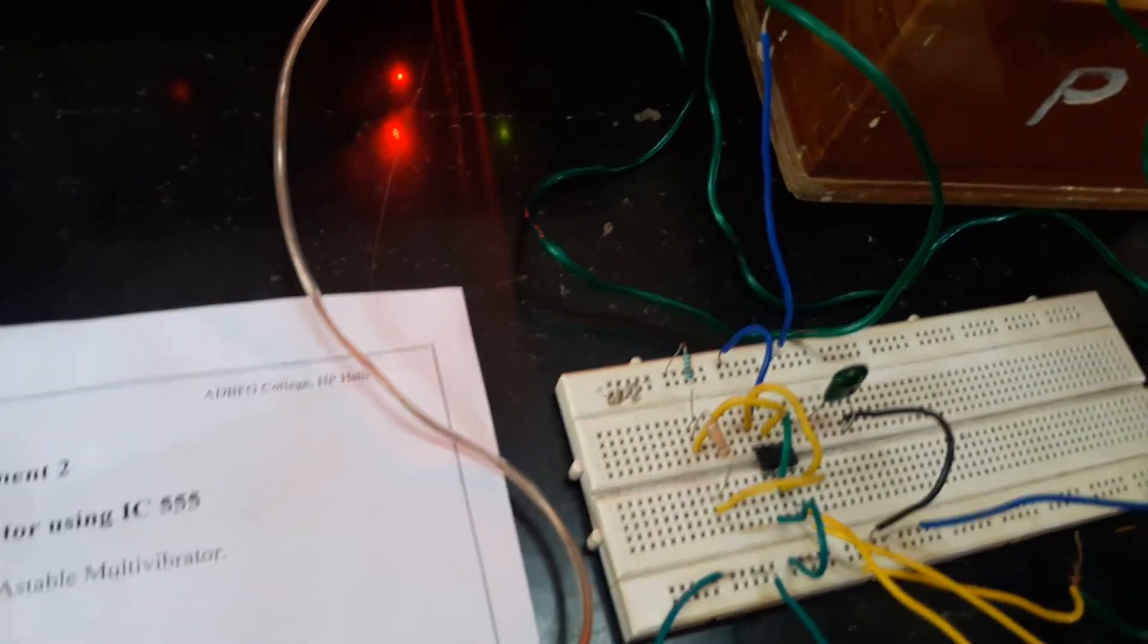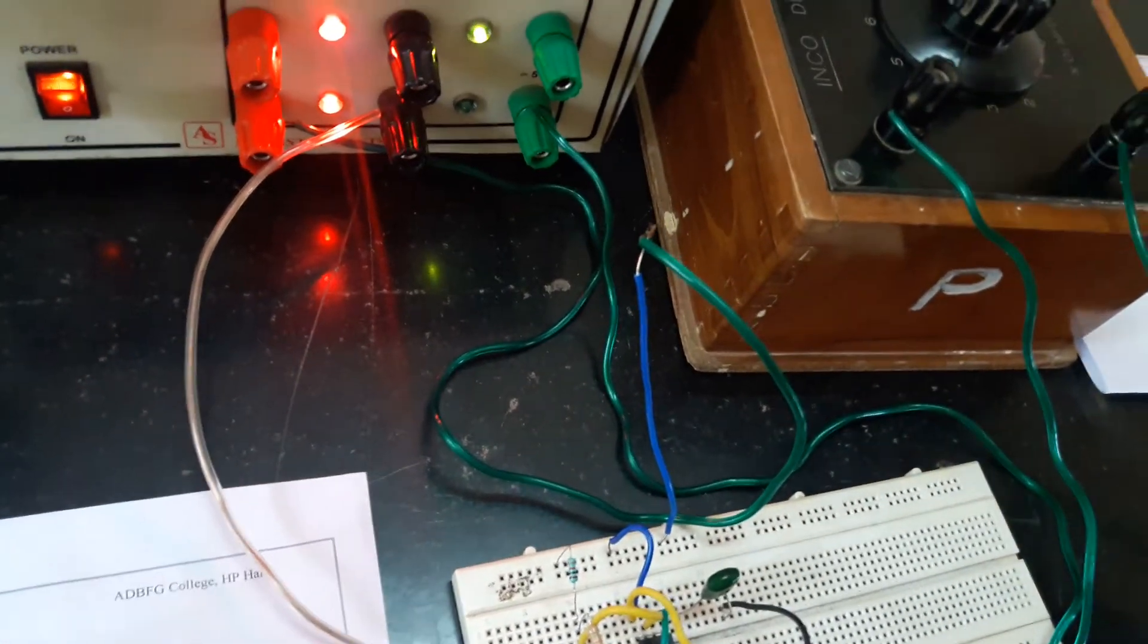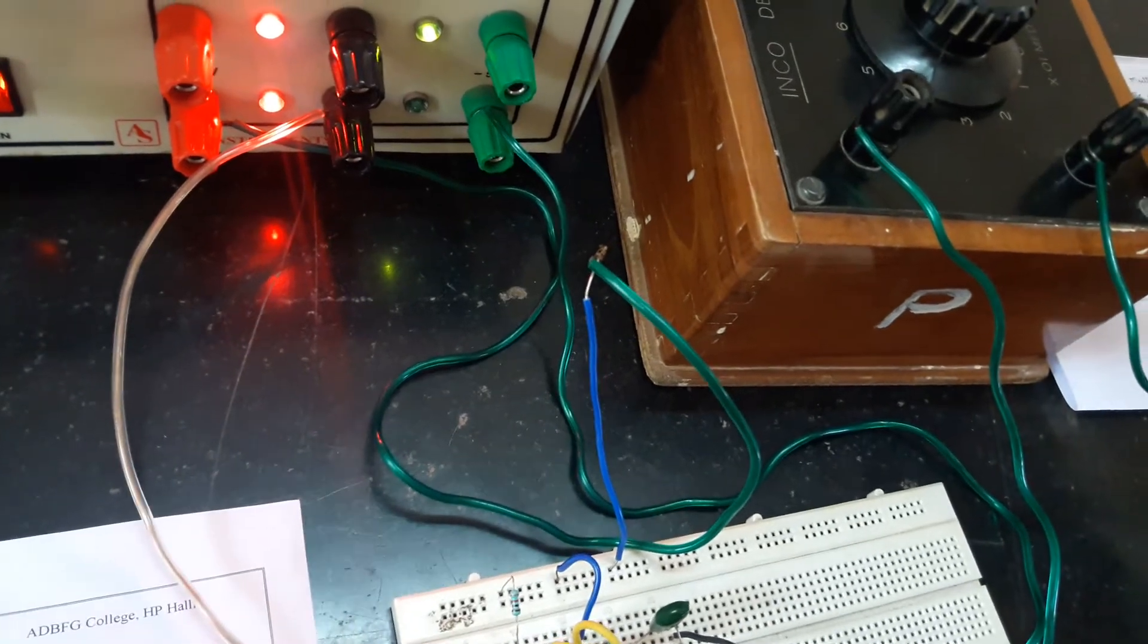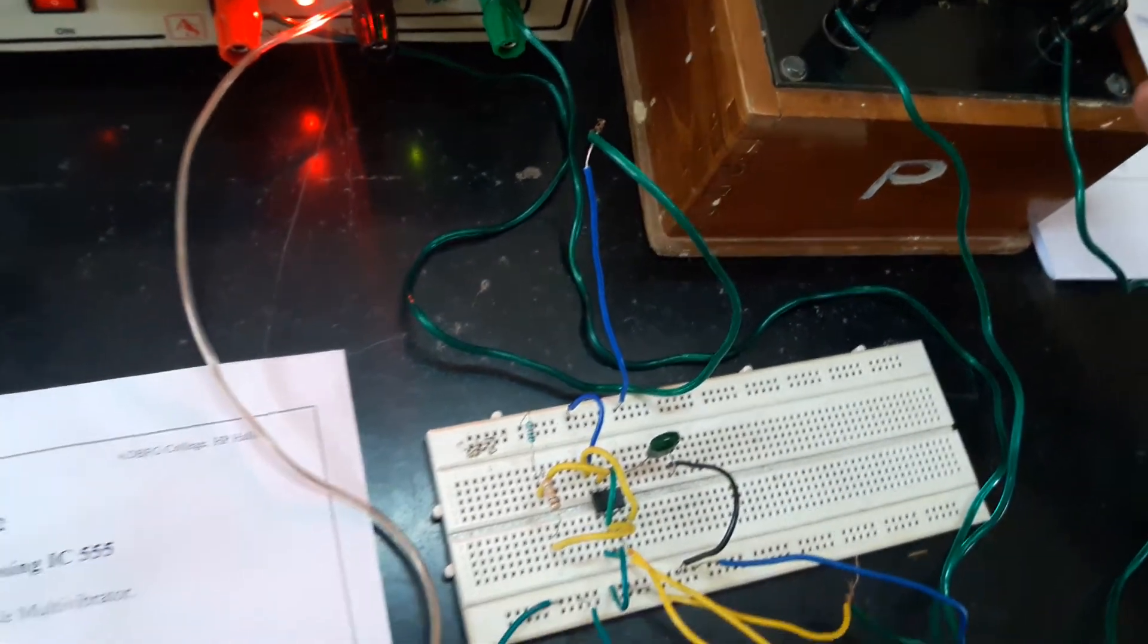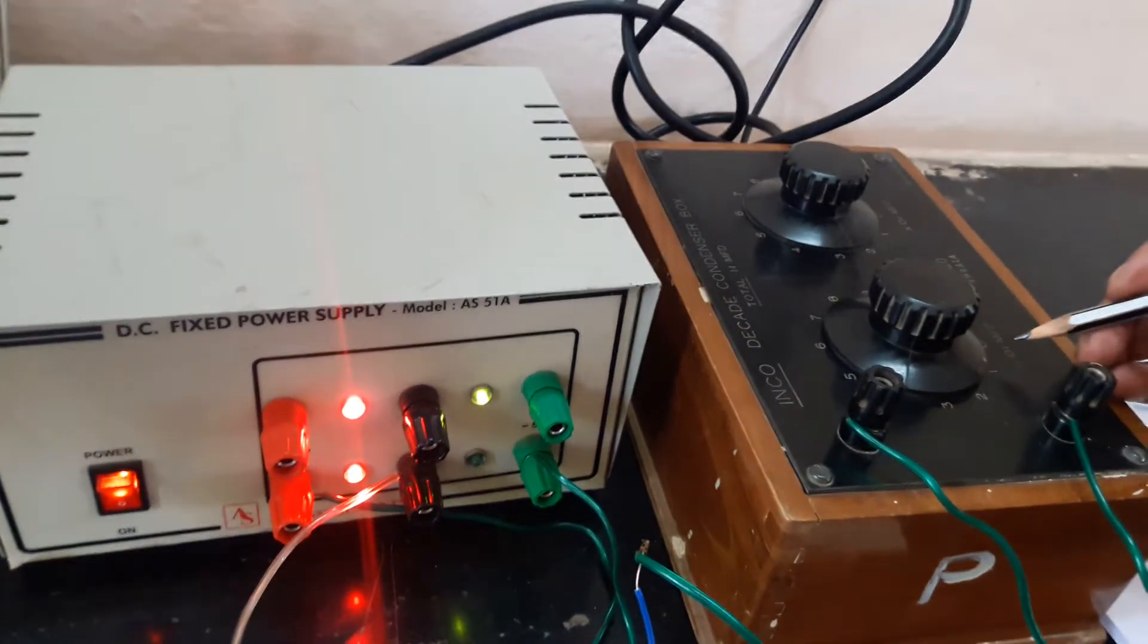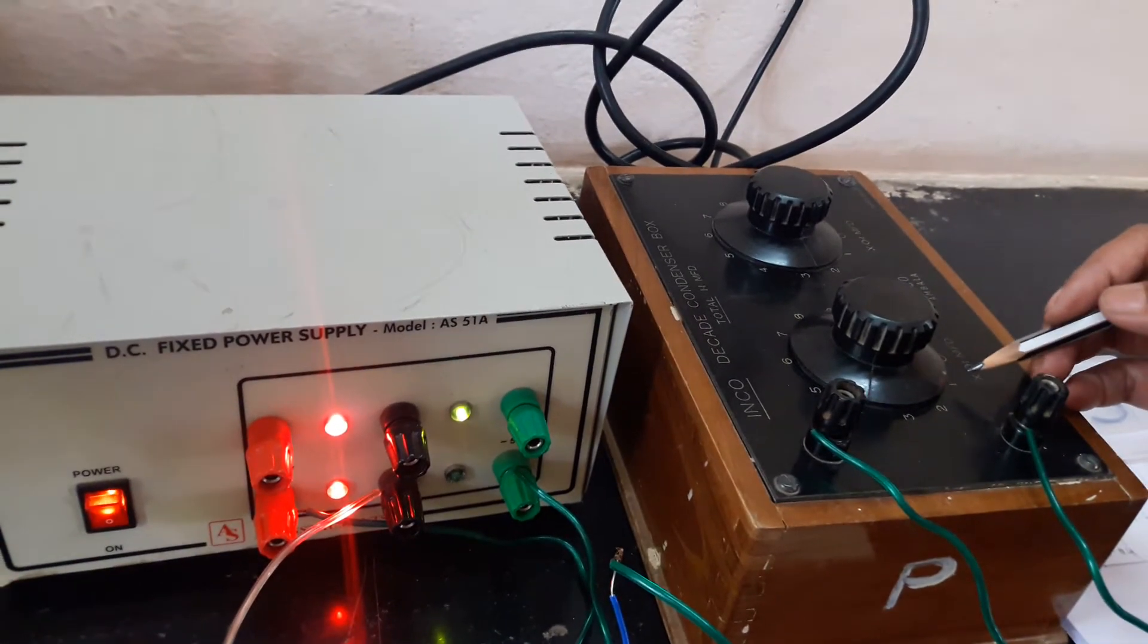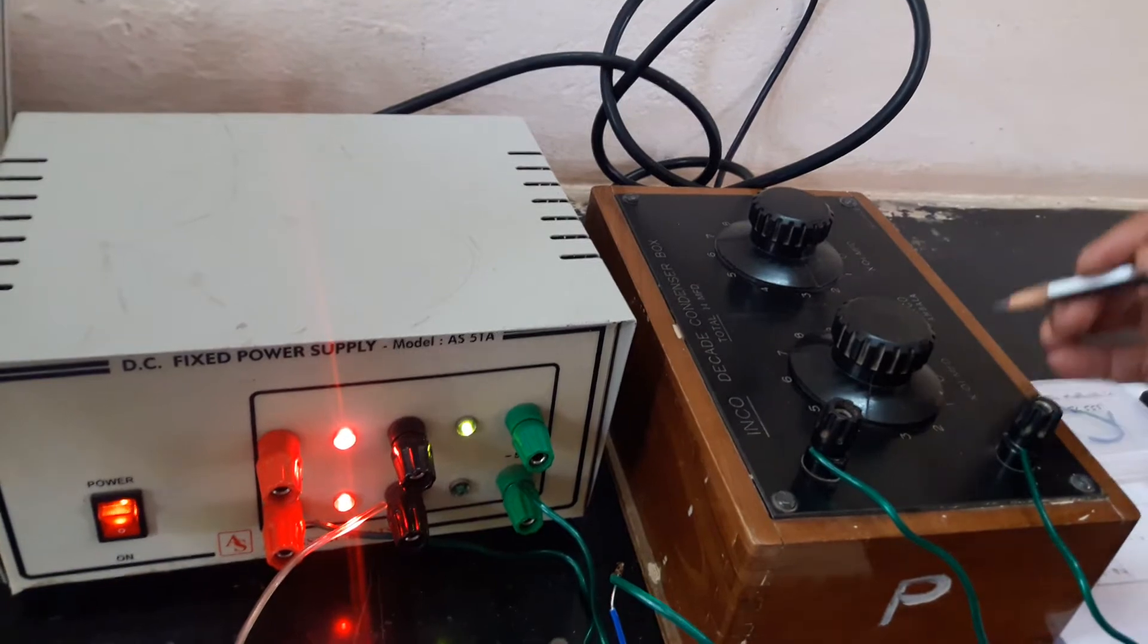From pin 2, it is going to capacitor, the another end of the capacitor should be given to ground and this capacitor is a variable capacitor. We are going to take readings for different values of capacitor. To begin with, I have kept it for 0.01 microfarad.